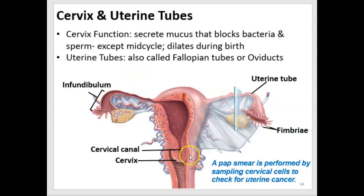The cervix also dilates during birth. You've probably heard about stages of labor where contractions are timed and the opening to the uterus is measured — that's the cervix being assessed for dilation to predict when the baby will be expelled. A Pap smear, which used to be performed routinely and is now sometimes recommended every five years, is a scraping or sampling of cervical cells to check for uterine cancer, since that's a common site for it to form.